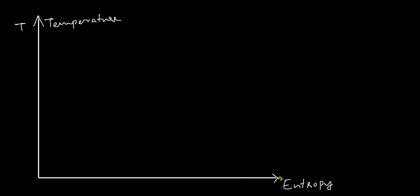I haven't really discussed entropy in any previous videos, but do keep watching — I will be publishing a video on entropy in the near future. So this is going to be a temperature-entropy plot. We know that below 0°C at atmospheric pressure, water is in solid or ice form, between 0 and 100°C water remains liquid, and above 100°C it is in gaseous form.